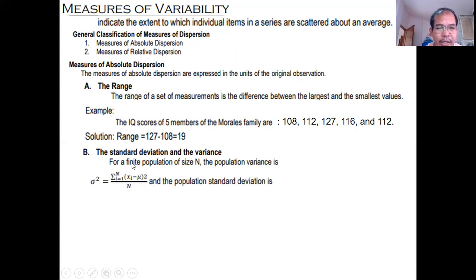Ang population variance, ito yung formula. Meron siyang exponent 2, small letter sigma exponent 2. Ang population standard deviation, just take the square root of this. So mawala na yung exponent 2. Kung may yung population standard deviation, square root na. The same with this.